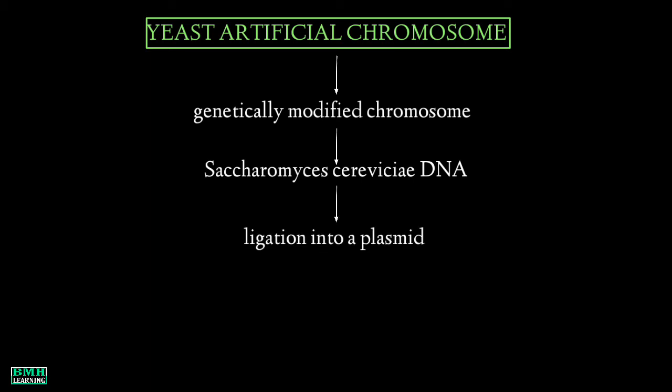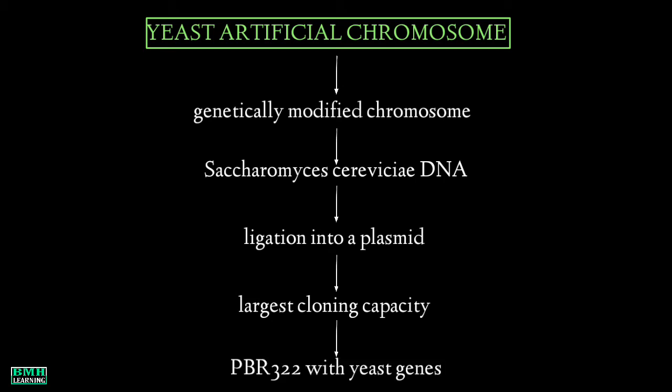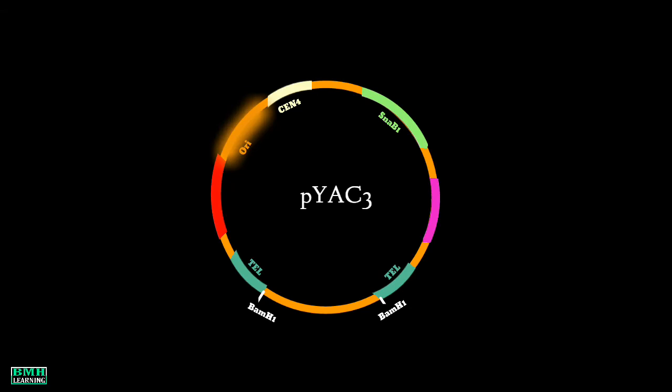We already have plasmid vectors, so why do this whole modification work and invest more time? It's because yeast artificial chromosomes provide the largest insert capacity of any cloning system — up to 1000 kb. Essentially, a YAC is a pBR322 plasmid into which a number of yeast genes have been inserted.